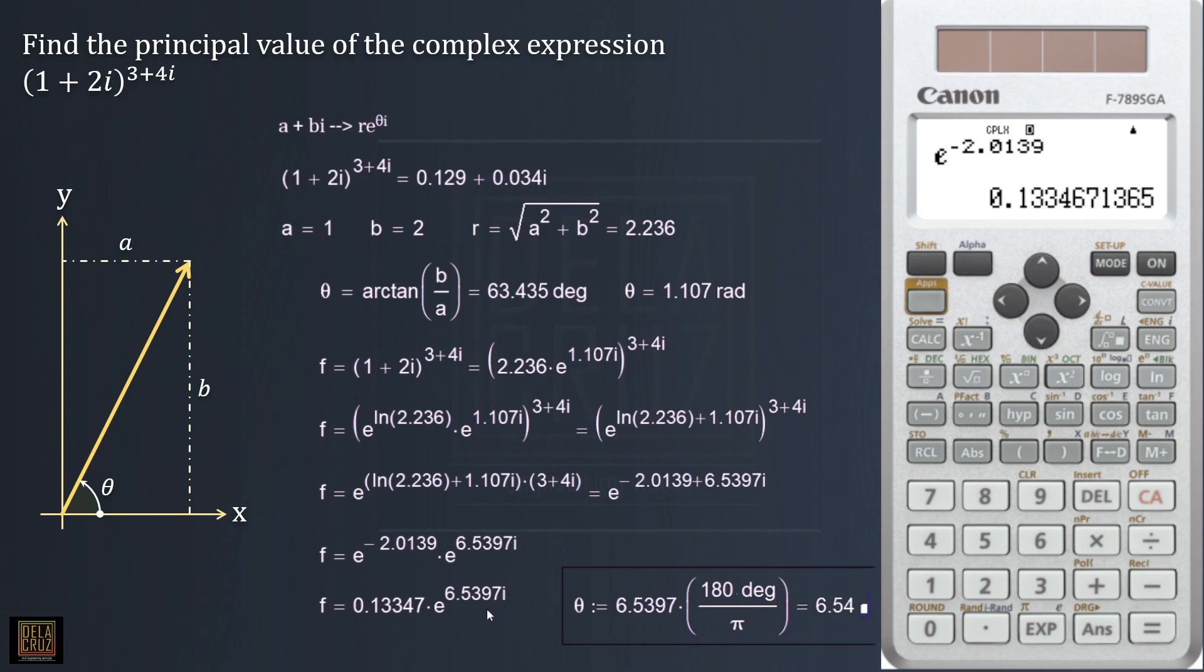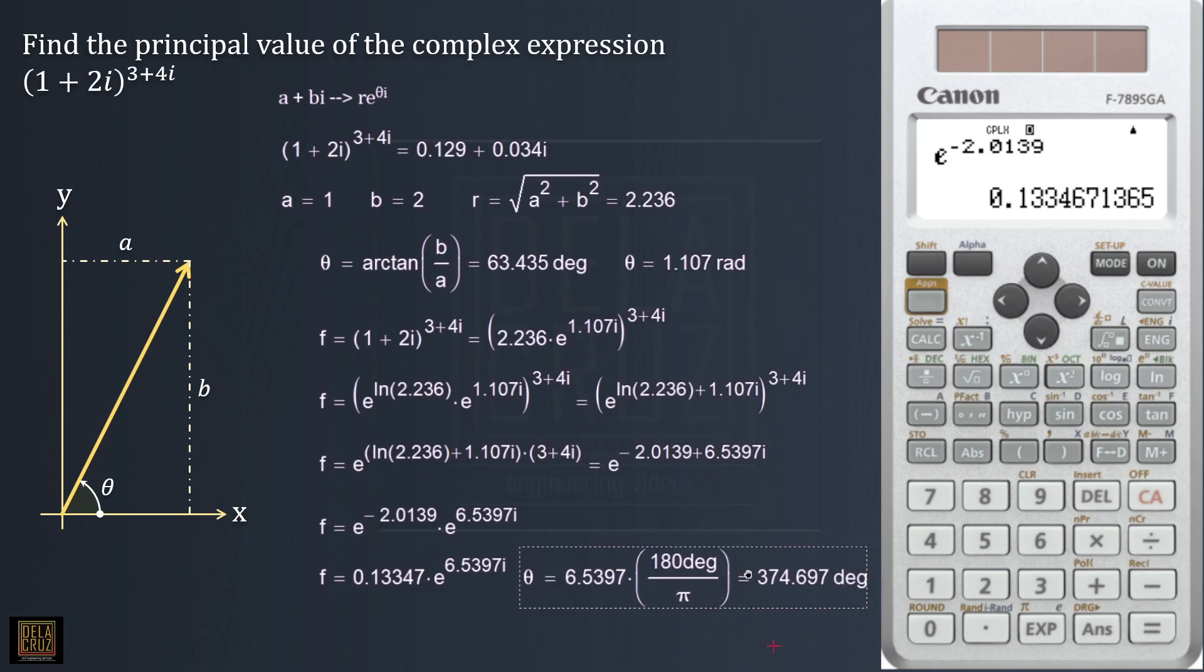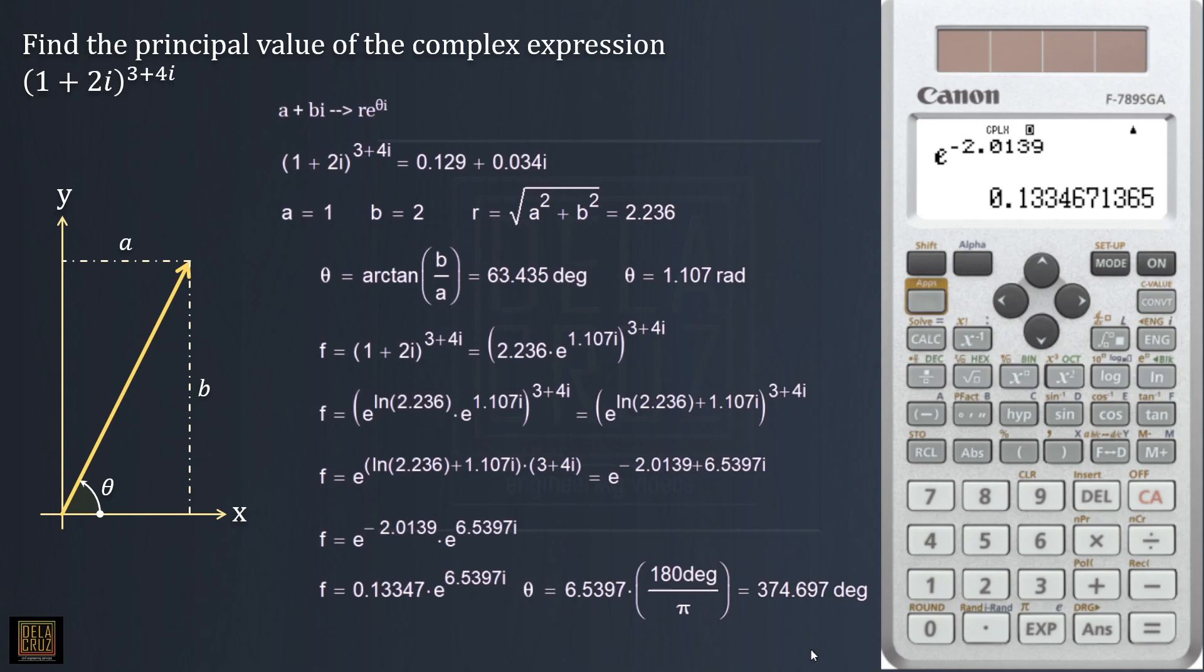In your calculator, we can directly rewrite this one in polar form. That's 0.13347, that's our r, then angle - where's the angle here? Angle of theta, which the theta is 374.6997. If we do it here, it will give you the answer in rectangular form: 0.129 plus 0.034i. So this is the answer - this is the actual answer using the mathcad software.